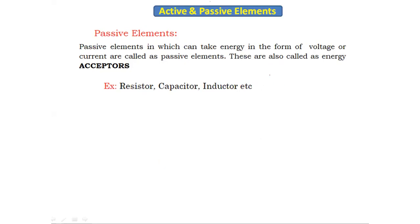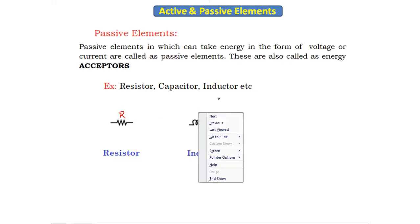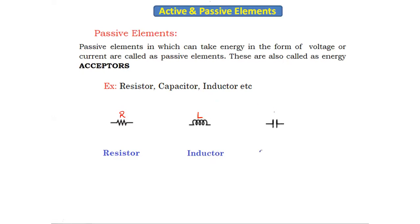Looking at the symbols of passive elements — this is the symbol of the resistor, denoted by the letter R. This is the symbol of the inductor, indicated by the letter L. And this is the symbol of the capacitor, denoted by the letter C. These are the three main examples of passive elements.